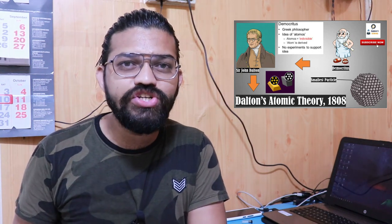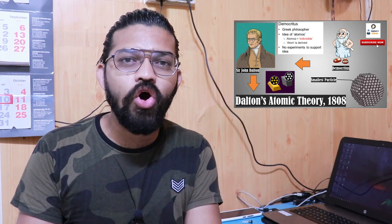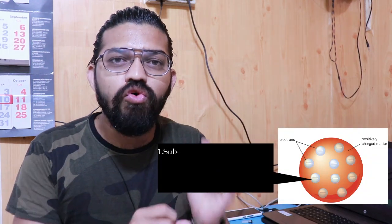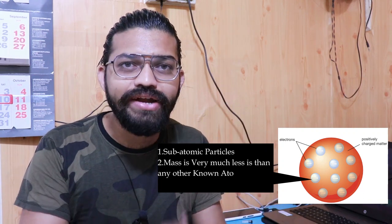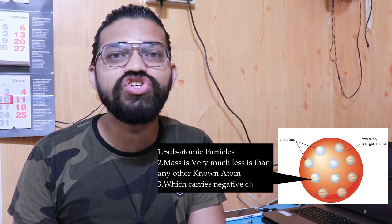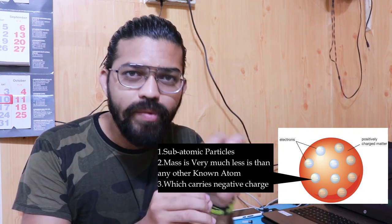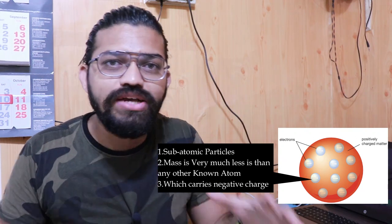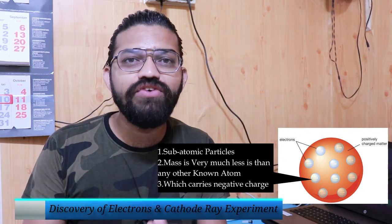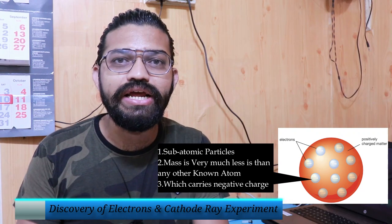In the 19th century, the research still goes on regarding the atoms and the structure of the atom. Scientists in the late 1800s found out that atoms consist of subatomic particles whose mass is very much less than any other known atom at that time and which carry negative charge. This particular subatomic particle was later renamed as the electron. So here I am talking about the discovery of the electrons in the late 1800s.